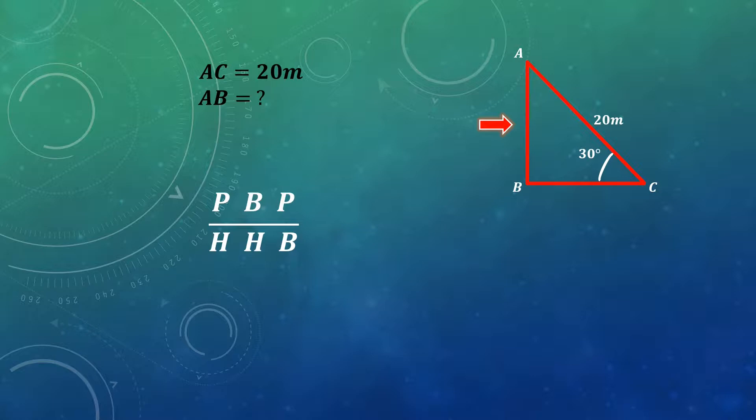P upon H, or perpendicular upon hypotenuse, is equal to sin 30 degrees. Cos 30 degrees will be equal to B upon H, that is base upon hypotenuse, and tan 30 degrees can be written as P upon B.